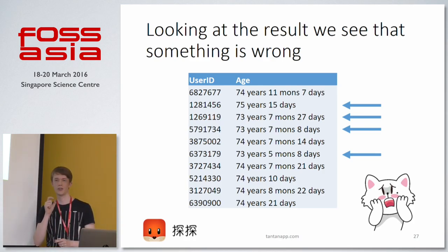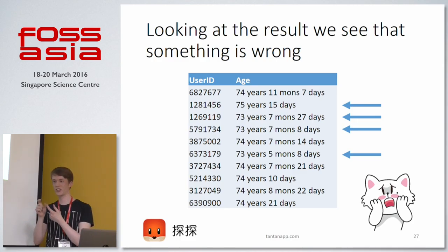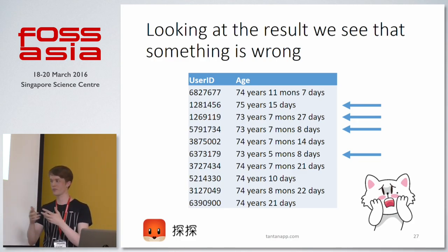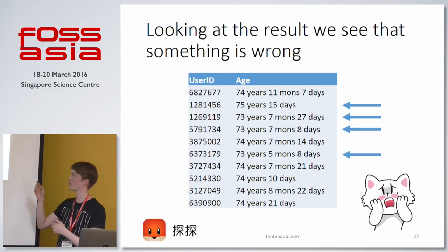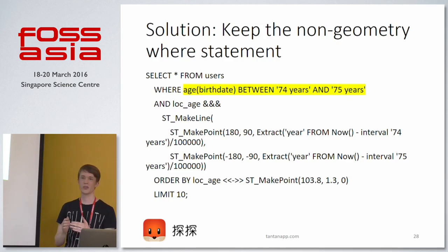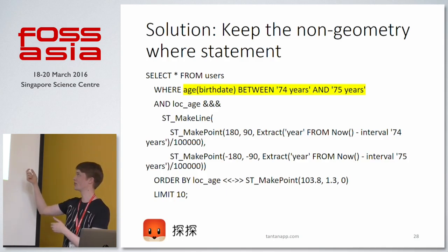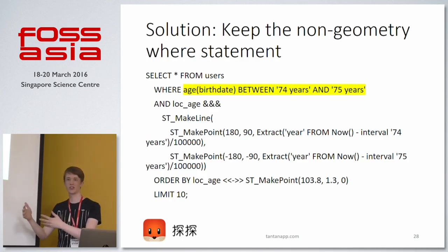The reason this happens is that the geo index is lossy, and we also scaled the age to a very small number — those two things together create this inexact result. What we need to do is add back the old WHERE statement: WHERE age BETWEEN 74 AND 75, and this will fix the problem.